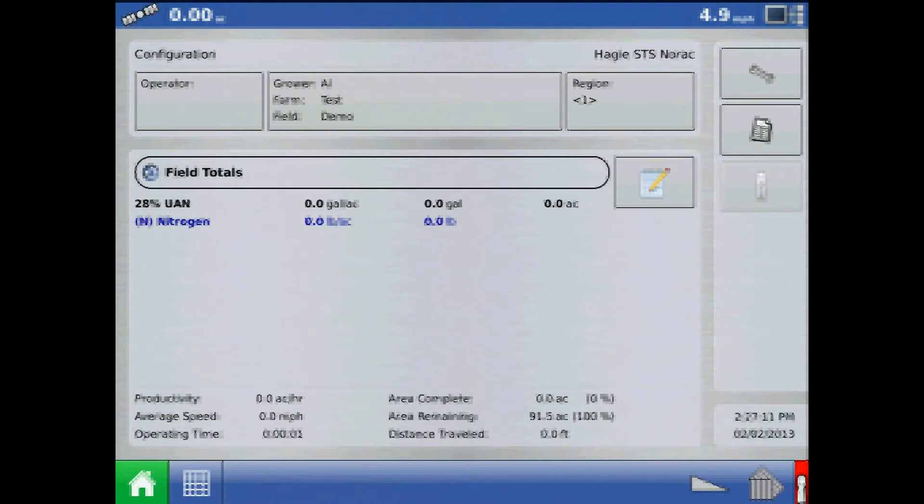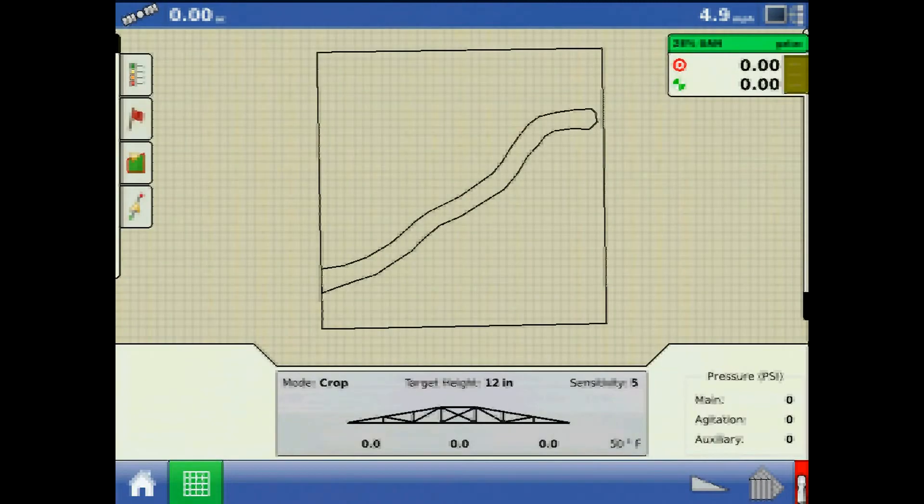If you have NORAC boom height control unlocked on your display and in the active configuration, the NORAC engage button will display on the taskbar to the left of the out-of-swath button. The engage button will engage and disengage automatic boom height control.